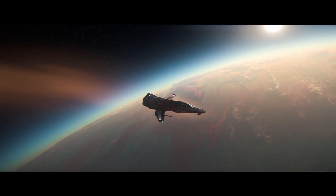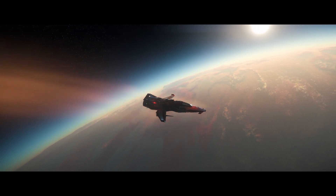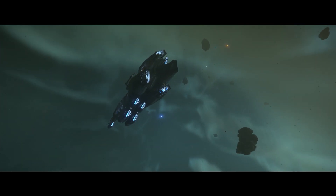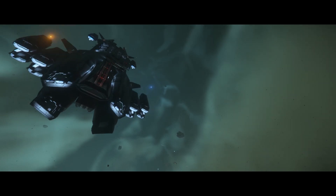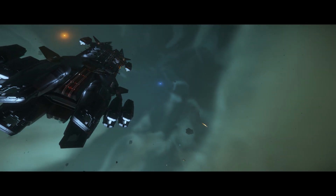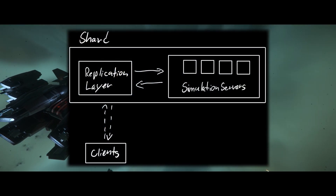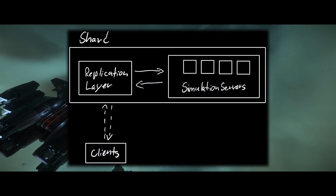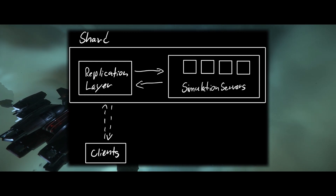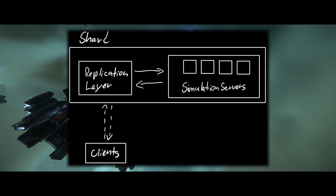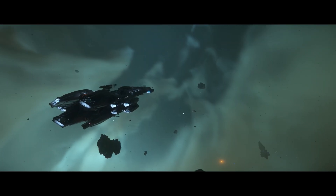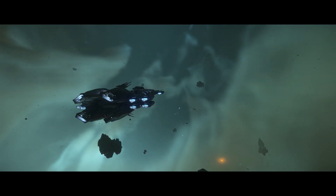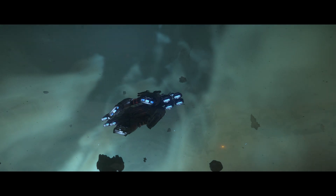Now is a good time to think about what CIG mean when they say shard and what does a shard contain. The way I understand it, a shard contains the mesh of simulation servers that simulate the verse and the replication layer. You could also say that a shard contains the game clients that are connected to it, but that might not be entirely true since clients can't transfer between shards.